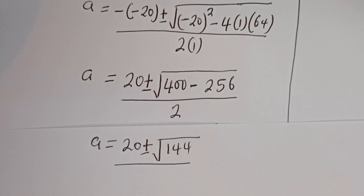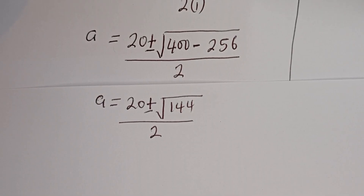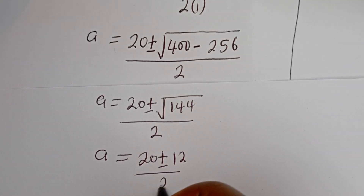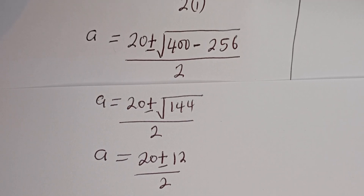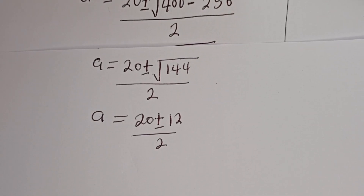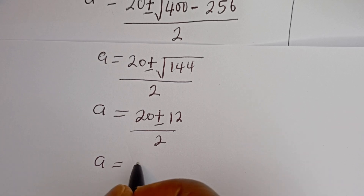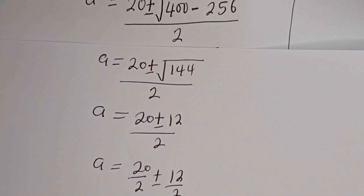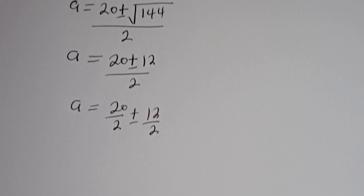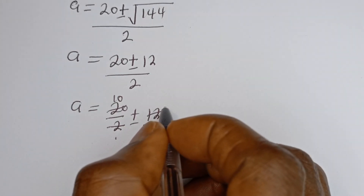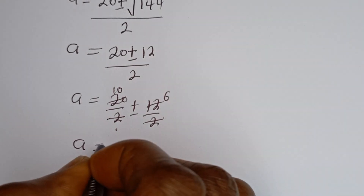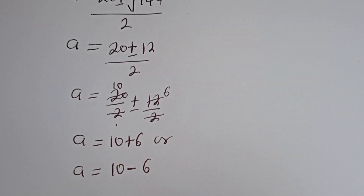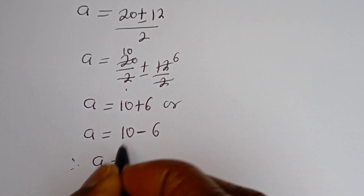The square root of 144 is 12, divided by 2. So a is equal to 20 plus or minus 12, divided by 2, which simplifies to 20 divided by 2, plus or minus 12 divided by 2, giving a equals 10 plus or minus 6. Therefore a1 is equal to 10 plus 6, which is 16, and a2 is equal to 10 minus 6, which is 4.